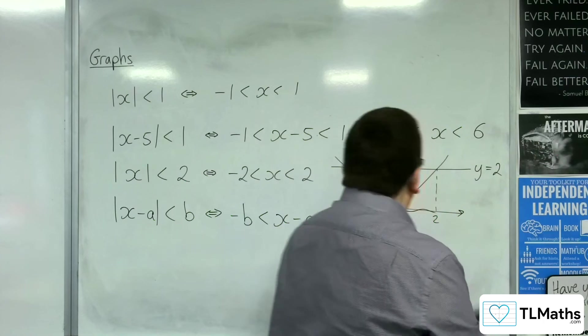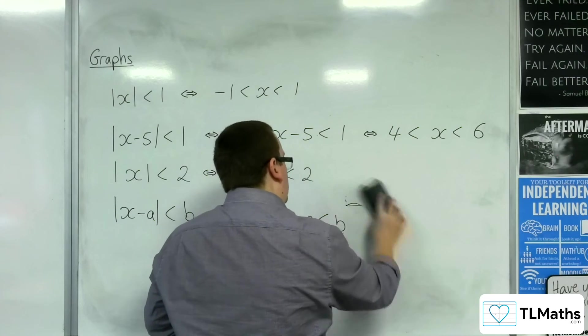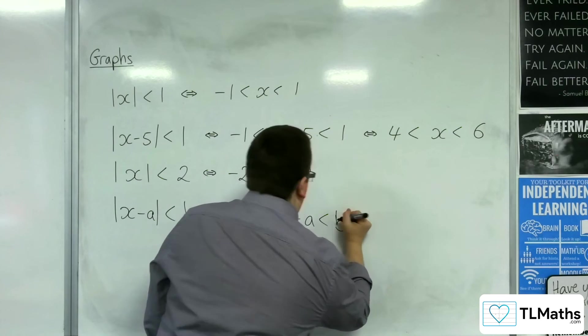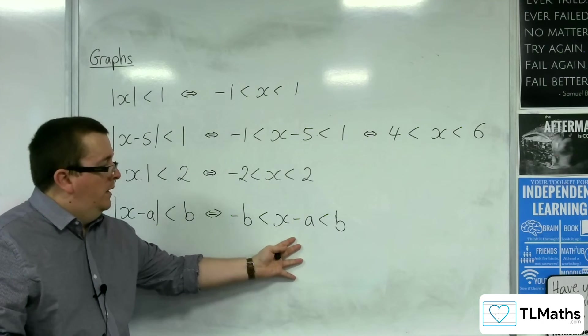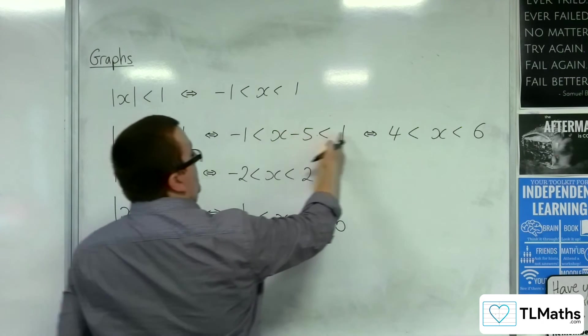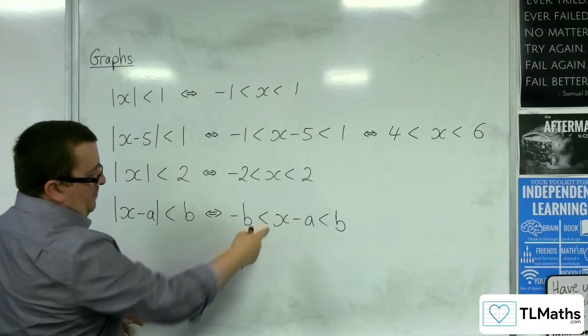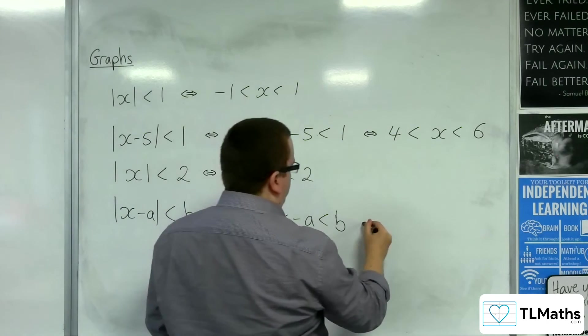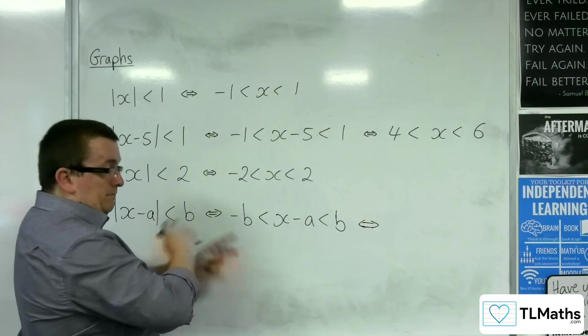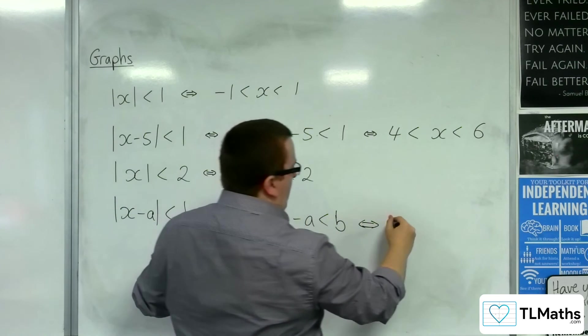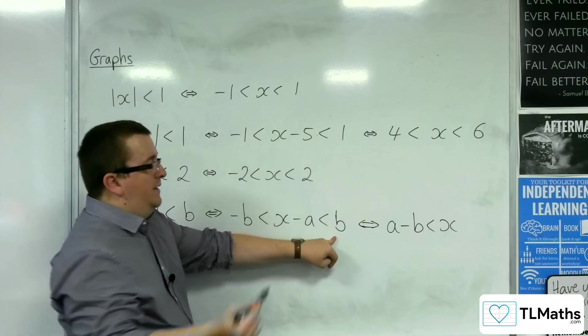Let's give myself a little bit more space. So, this is equivalent to this. And then, just as I did up here where I added 5 to all three columns, I'm going to add a to all three columns. I said b, I meant a. So, I get a minus b is less than x is less than a plus b.